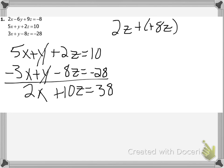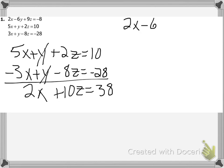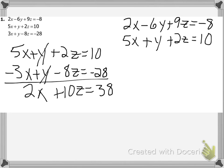Step two says to eliminate the same variable using a different combination of equations. I just used equations 2 and 3, so I can't use that combination again. Now I'll use equations 1 and 2, and I have to eliminate y — the same variable I just eliminated — so that both Equation A and Equation B have the same two variables.